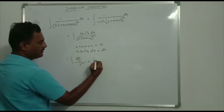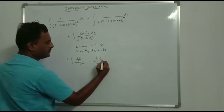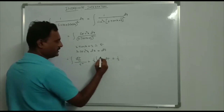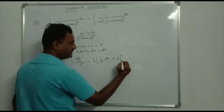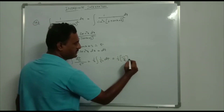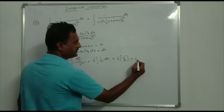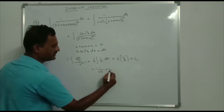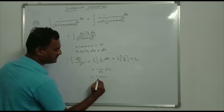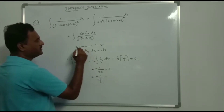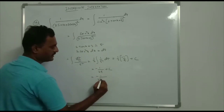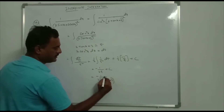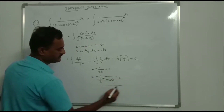Substituting: (1/2) integration of 1/t² dt = (1/2) · (-1/t) + c = -1/(2t) + c. Substituting t = 2 tan x + 3: the result is -1/(2(2 tan x + 3)) + c. This is done.